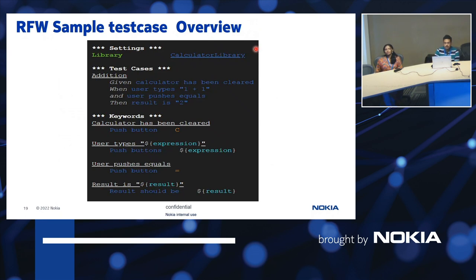This is a sample robot framework test case overview. In the settings section, we have a documentation entry representing the exact intention of the test case, then the library — usually a .py file, in this case a calculator library. The test cases section is a high-level case where the user states what he wants to achieve. For example, a sample addition test case: given the calculator has been cleared, when the user types an input and pushes equals, the result is 2.